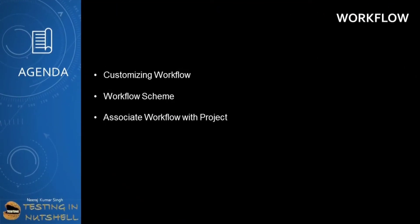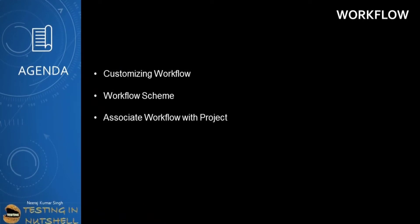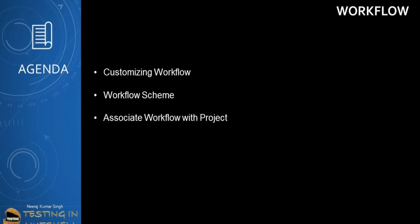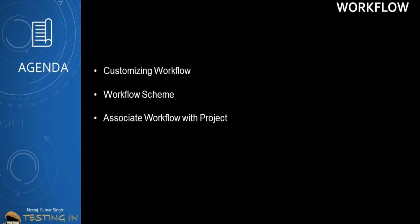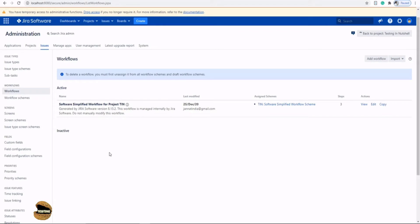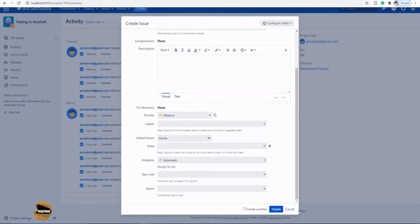As part of this tutorial, we'll be getting into the most important concept of customizing Jira administrator — that's called a workflow. We'll be understanding how to customize a workflow, how to create a new workflow, workflow schemes, and how to use these workflow schemes to associate a workflow with a particular project or issue type. All you need is access to the workflow sections in the Jira administrator.